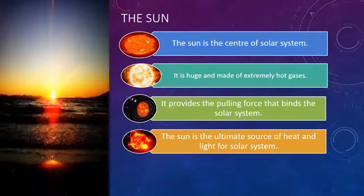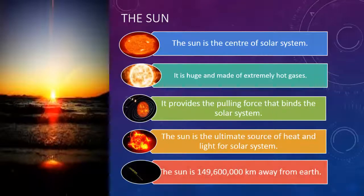The Sun is the ultimate source of heat and light for the solar system. The Sun is 149,600,000 km away from Earth.